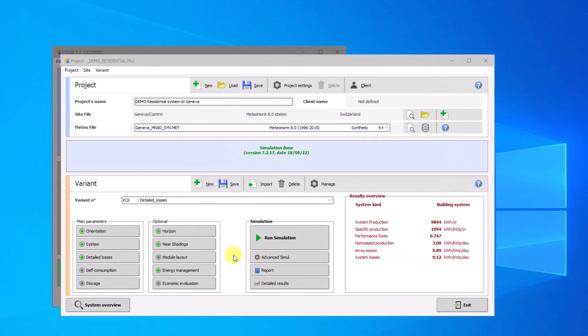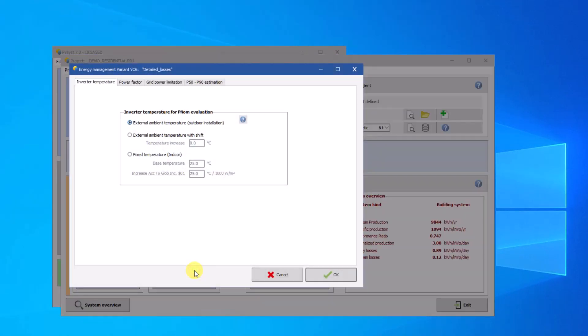For activating the P50-P90 tool, please open the button Energy Management page P50-P90 estimation in the grid's project dialog.